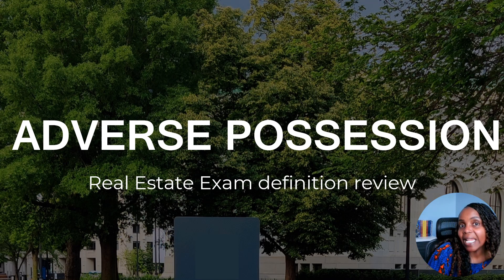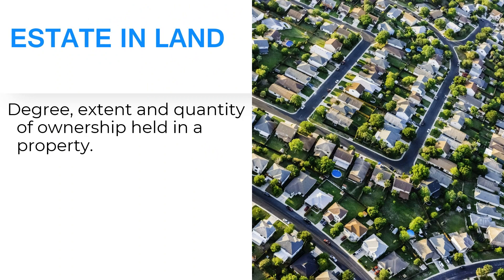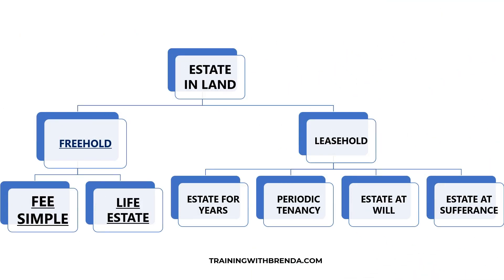Property ownership is one out of the 11 topics. You might have heard the definition of bundle of legal rights. This is the one that goes through when you own property, what it is that comes along with those rights. Leading us to the term estate and land. Estate and land is going to go through how much of the property do you own, and are there any limitations that are attached to the property — for example, deed restrictions. How long do you have access to this property in terms of your rights? It is broken down into two.